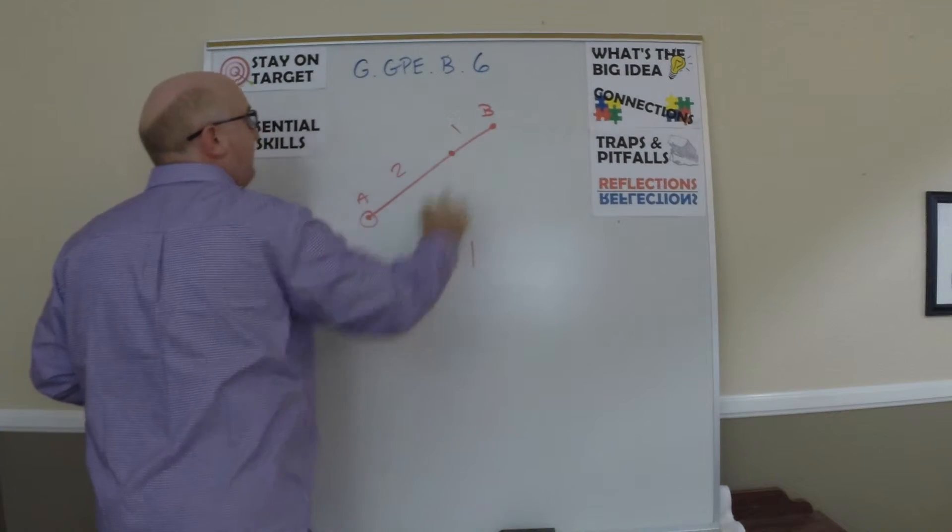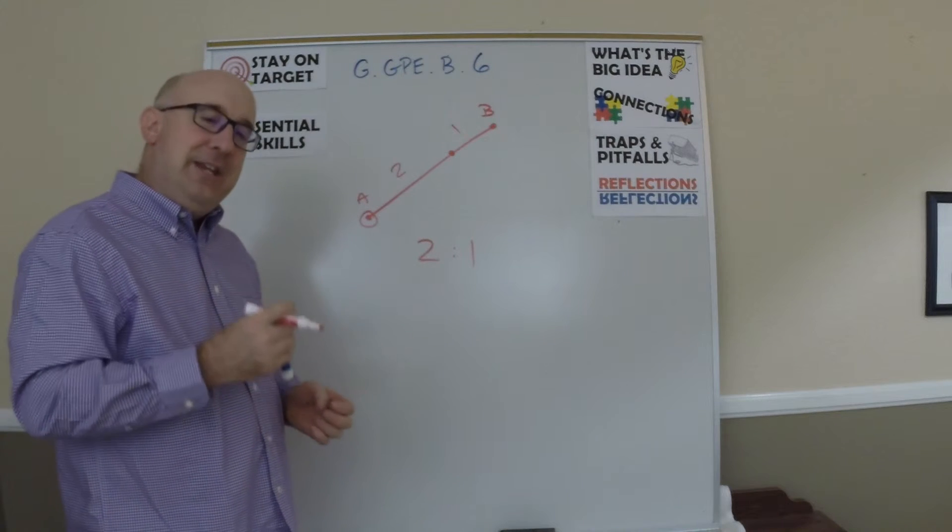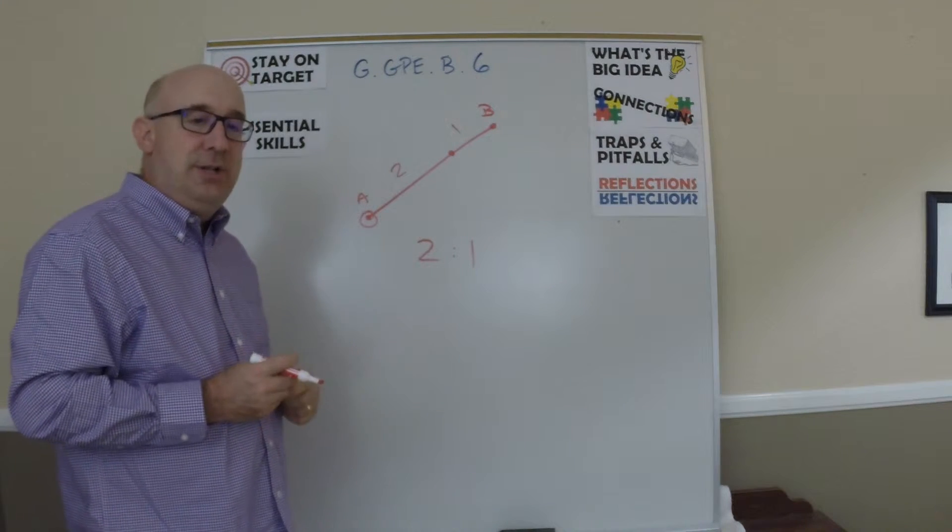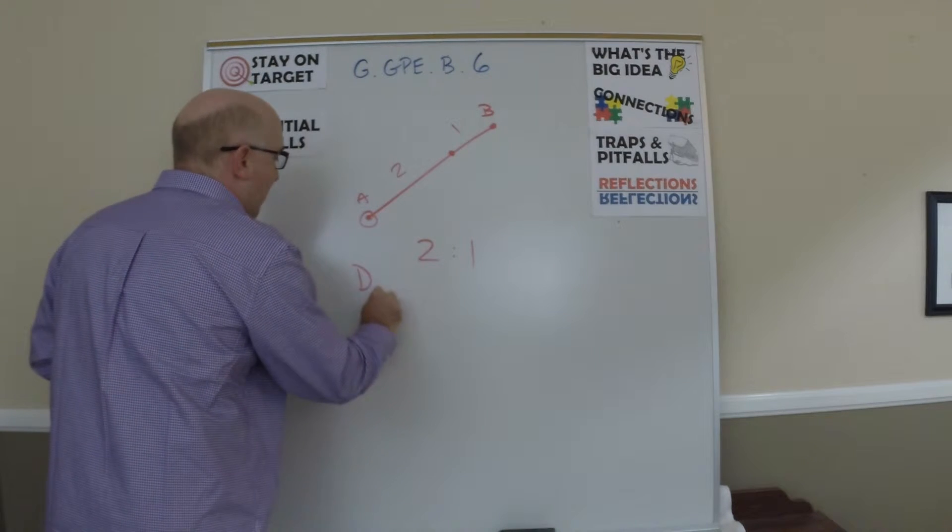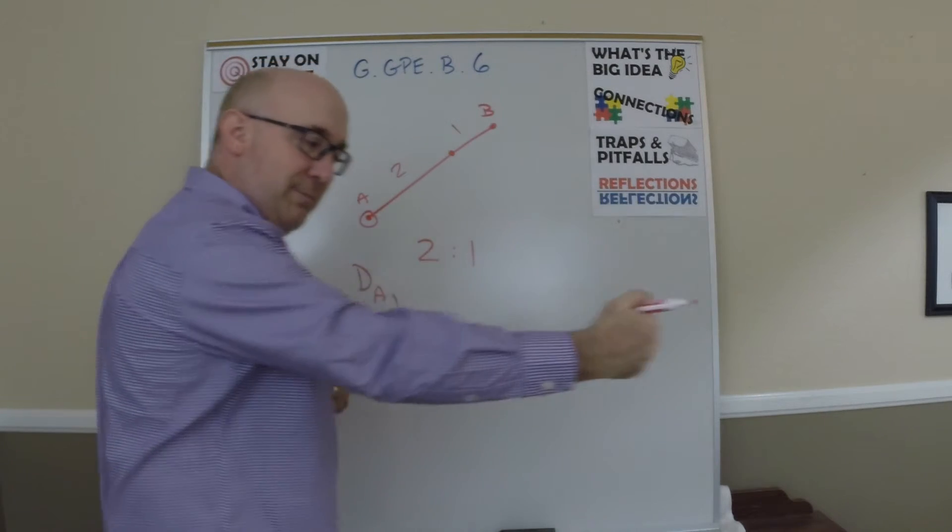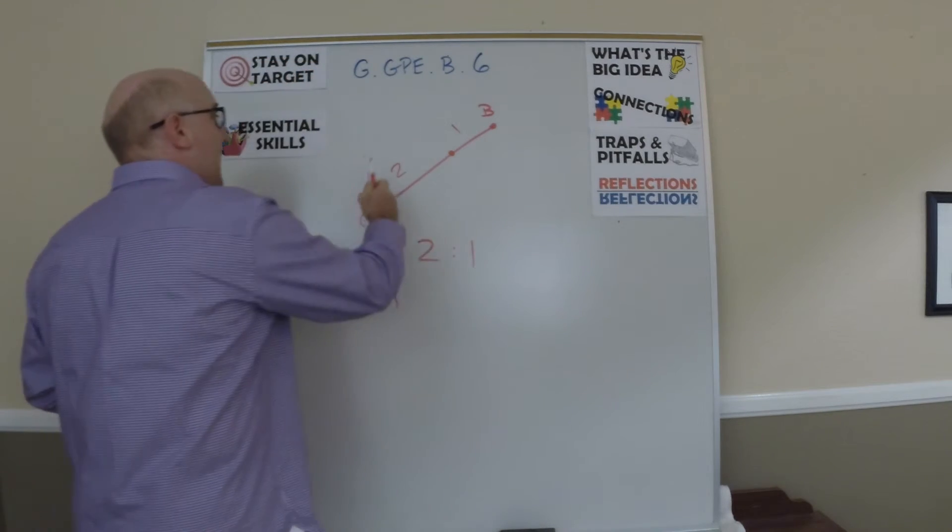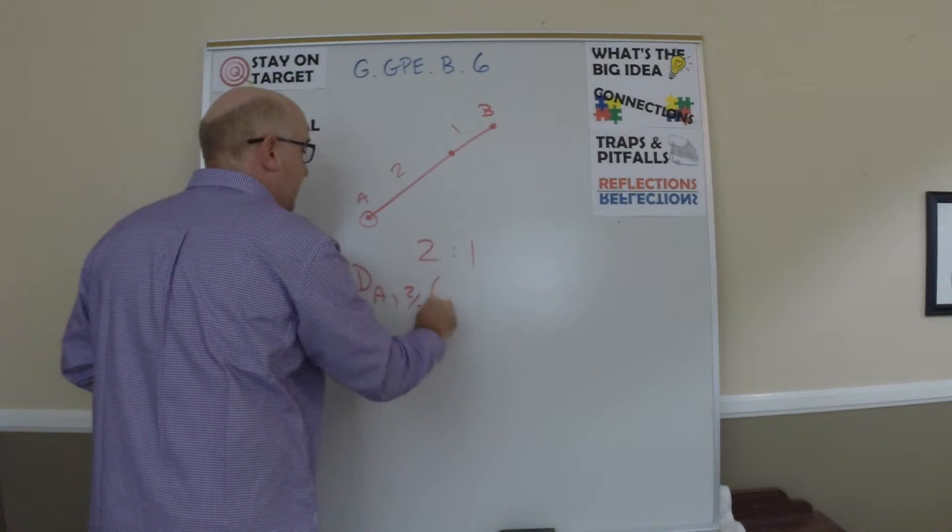Now I think you can kind of see the connection to dilations. If we did a dilation about A, we would want to take our point B and pull it back. We wanted to go two of the three there, so it'd be two-thirds, right? B would bring us to the point we're interested in, point P here.